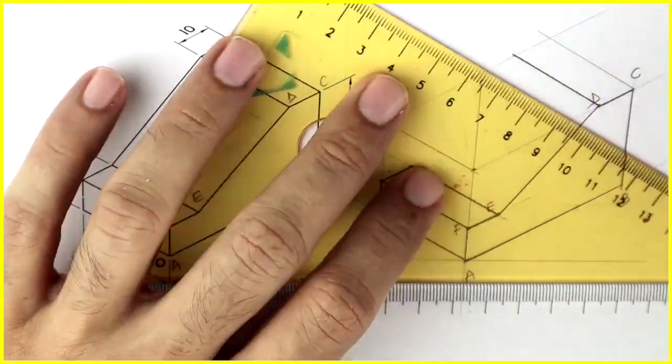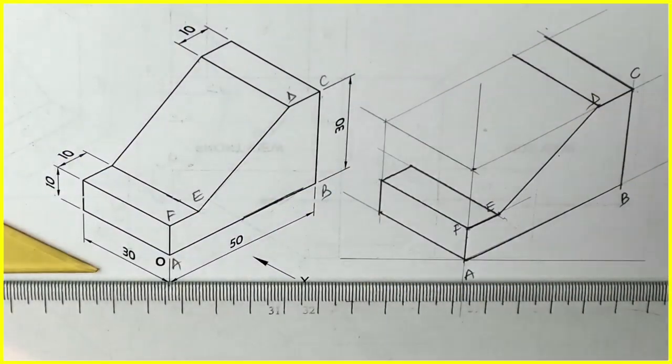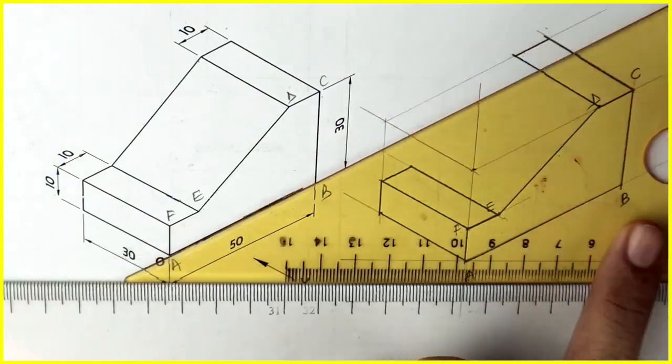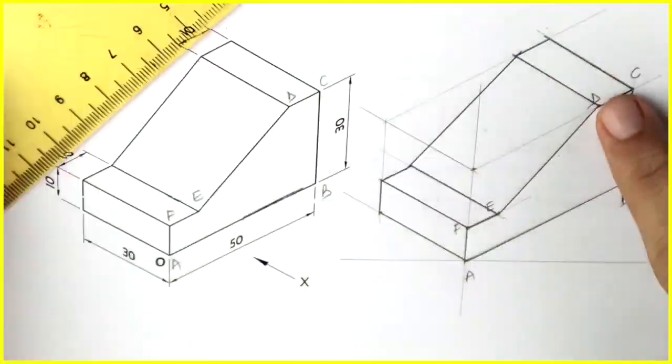Same, we will take point B also behind by 30, and C also behind by 30. After that we'll join this inclined line. Thank you.